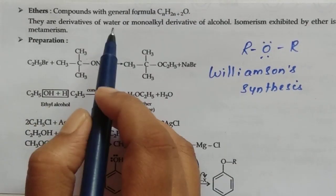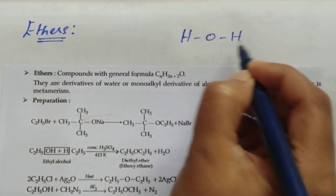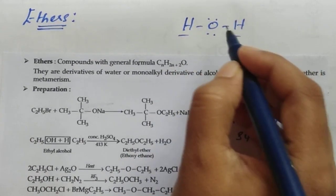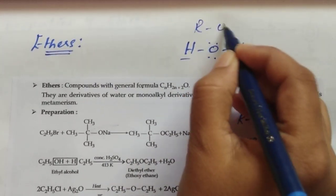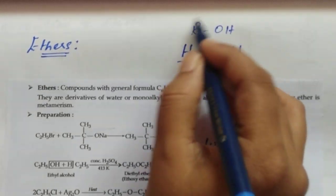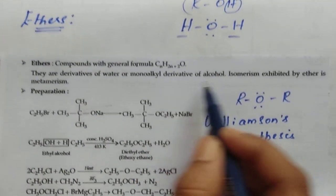They are dialkyl derivatives of water. Water molecule is HOH. So here both hydrogens are replaced with alkyl groups, we get ether. Otherwise, monoalkyl derivative, alcohol is ROH. Here monoalkyl derivative, this H is replaced with R means monoalkyl derivative of alcohol.